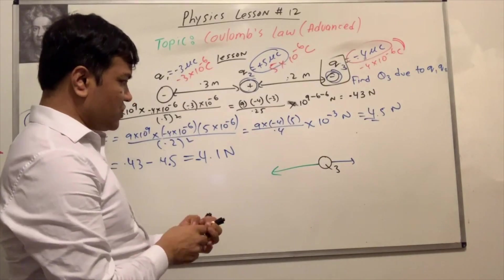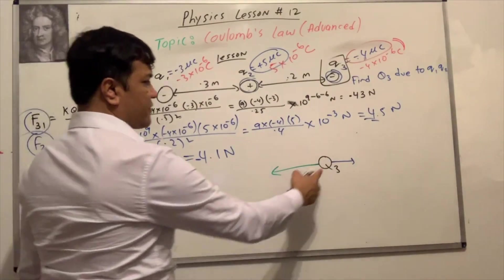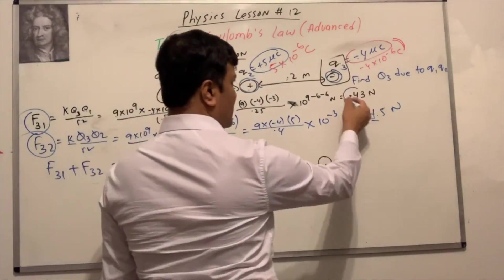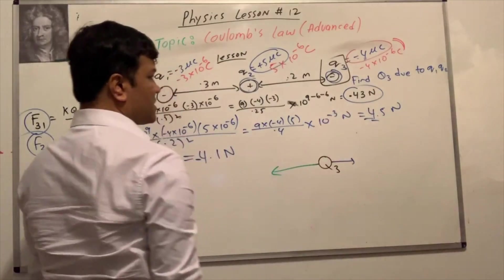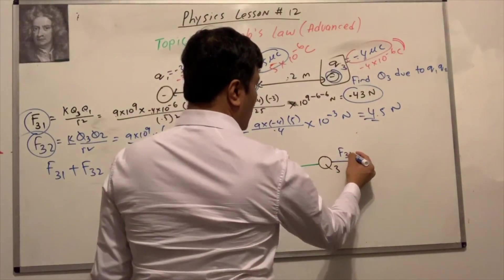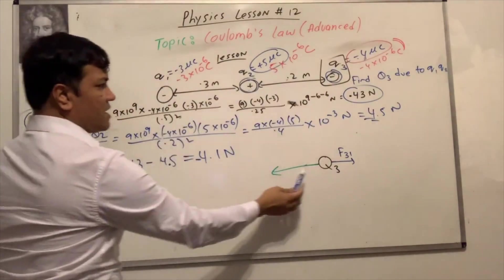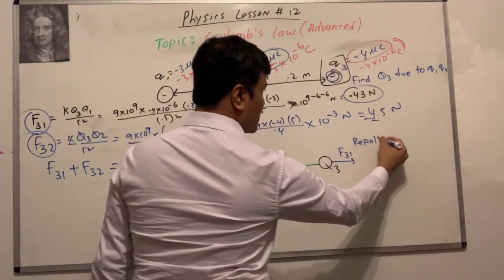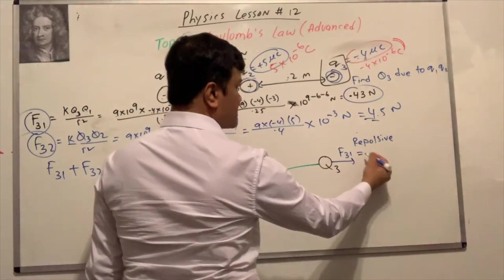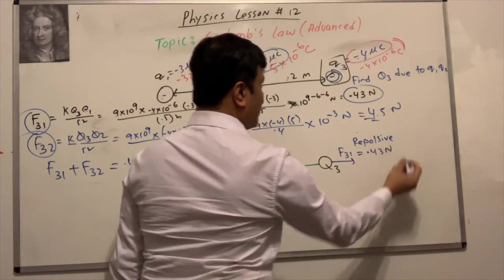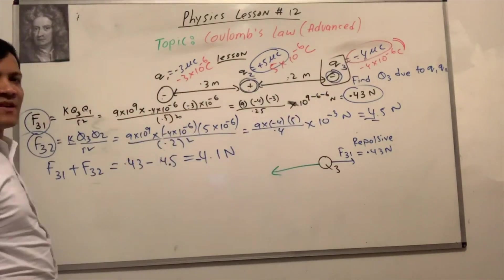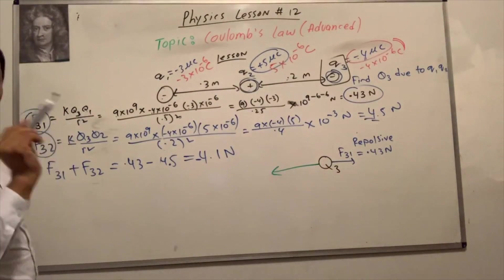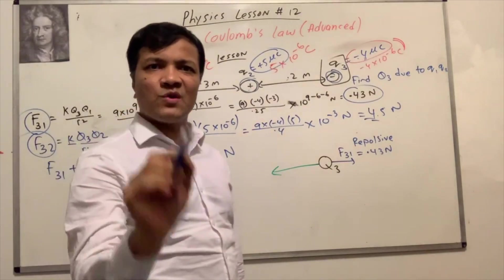The blue line represents F31 — it's the smaller force. F31 is between q3 and q1, both of which are negative. Negative repels negative, so this is a repulsive force of 0.43 Newton. There is a 0.43 Newton repulsive force between q3 and q1.